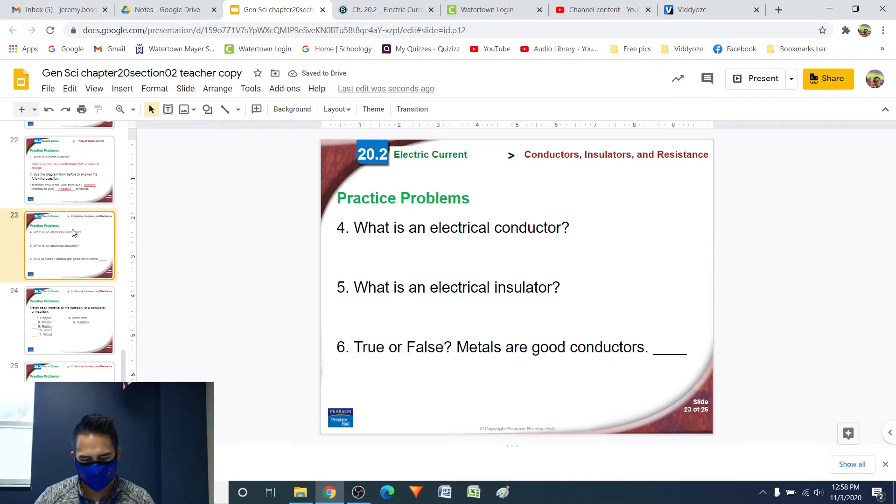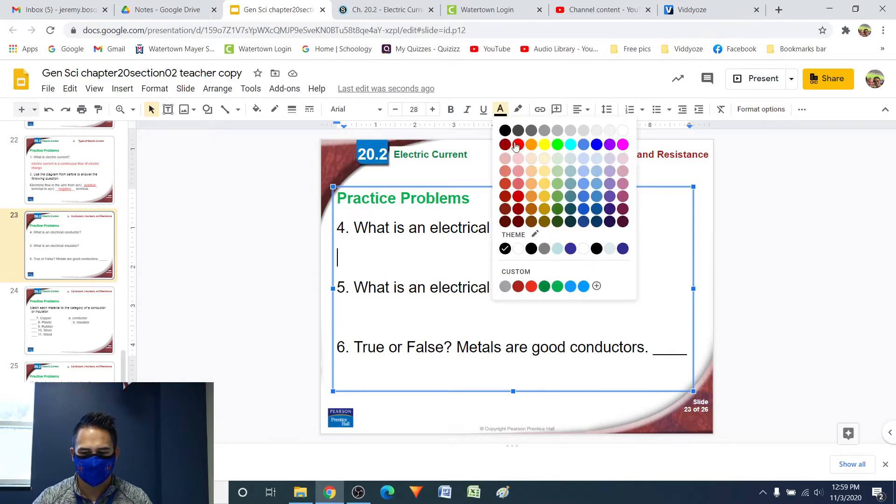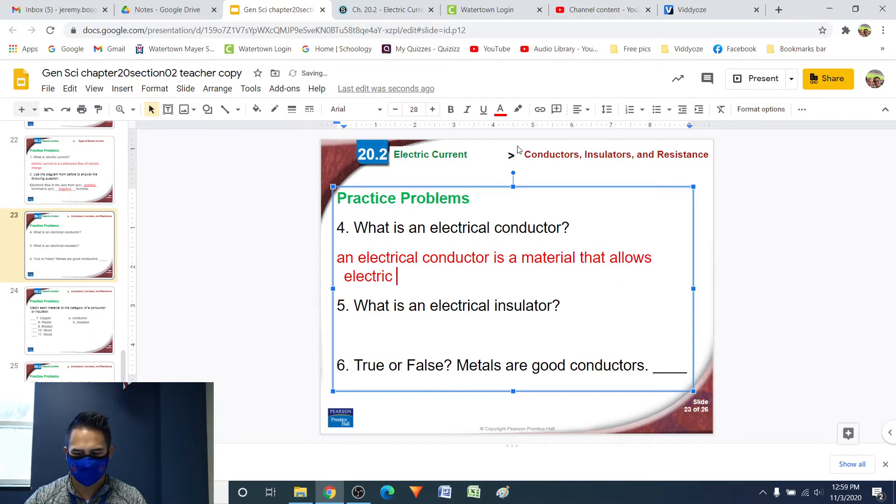Number four, what is an electrical conductor? So in this chapter section, we talked about different types of materials. Conductors are one type, and that is a material that allows electric charge to flow through it very easily. So we can say an electrical conductor is a material that allows electric charge to flow through it easily.